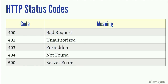For status codes where things are not going so well — these start with a 4 or a 5. If they start with a 4, it's the user's fault. If they start with a 5, it's the server's fault. Like my fault, your fault — that's how it works.